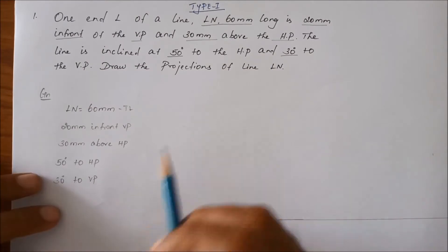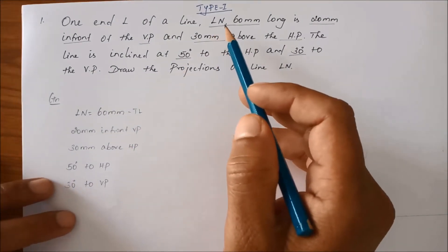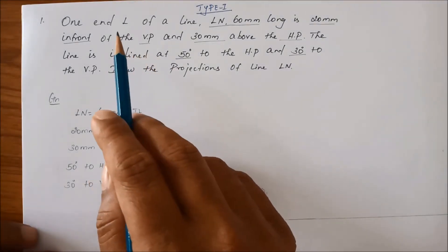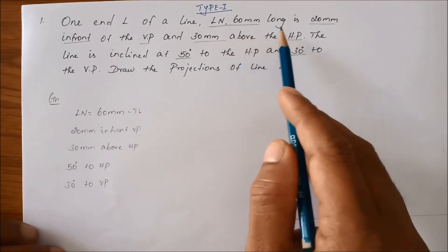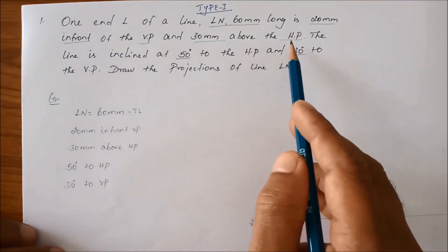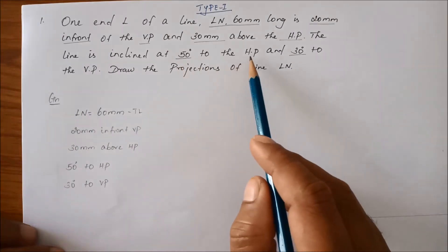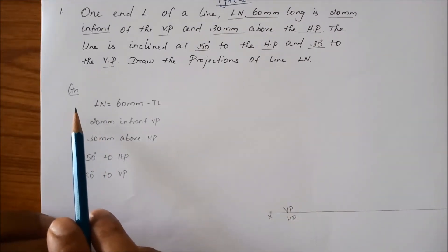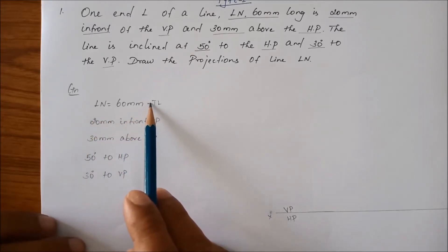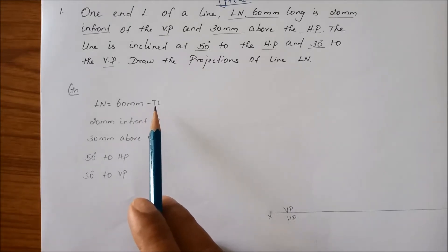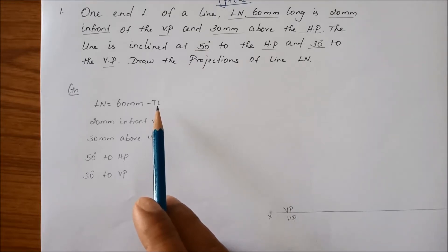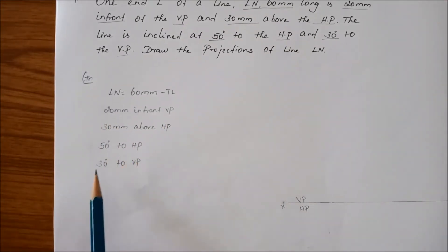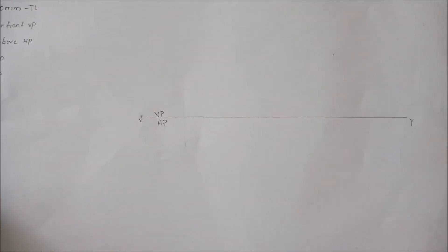As I have taught you earlier about projection of a straight line, now I am doing the construction — how to draw the line. Here is the question: line L is 60mm, which is the true length. The line is 20mm in front of VP and 30mm above HP. The line is inclined at 50 degrees to HP and 30 degrees to VP.